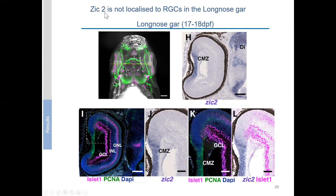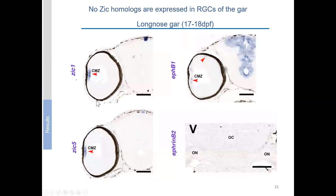Other recent studies have shown that Zic2 may not be the only family member to induce ipsilateral ganglion cells — Zic1 and Zic5 are also implicated. We looked at these two transcription factors and found expression only in the ciliary margin zone, not in retinal ganglion cells. Furthermore, EphB1 and EphrinB2 are not expressed in retinal ganglion cells, and in a cross section of the ventral diencephalon of the long nose gar there is absolutely no expression of EphrinB2. This means the Zic2 molecular cascade does not appear to be conserved in the long nose gar.